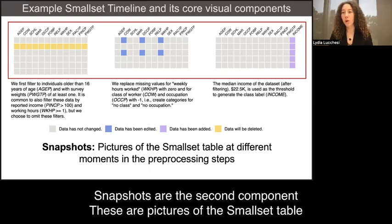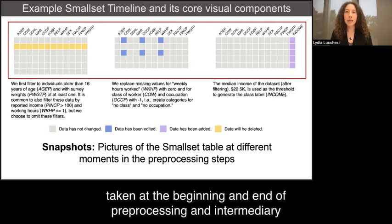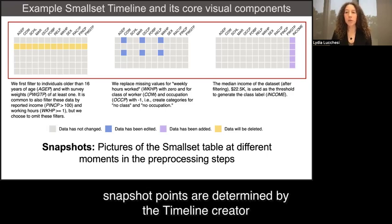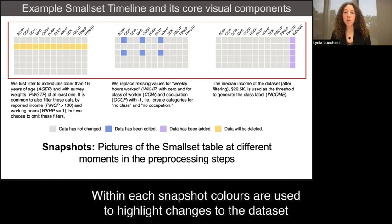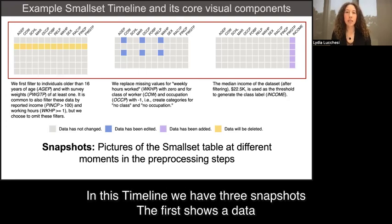Snapshots are the second component. These are pictures of the small set table at different moments in the pre-processing steps. Snapshots are automatically taken at the beginning and end of pre-processing, and intermediary snapshot points are determined by the timeline creator. Within each snapshot, colors are used to highlight changes to the dataset and differentiate between data edits, additions, and deletions. In this timeline, we have three snapshots.